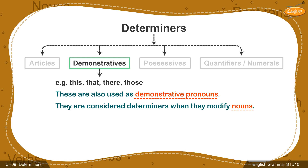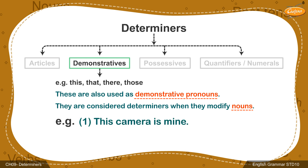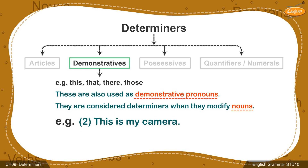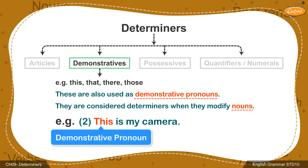In the first example, 'this camera is mine,' 'this' is followed by a noun 'camera,' so it is treated as a determiner. In the second sentence, 'this is my camera,' 'this' is modifying the noun 'camera,' so it is treated as a demonstrative pronoun.